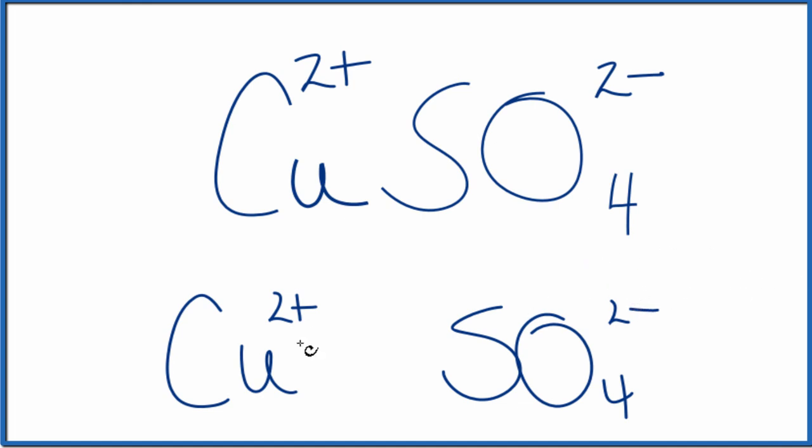So in answer to our question, we'll have one copper 2 ion and one sulfate polyatomic ion. So a total of two ions in CuSO4.